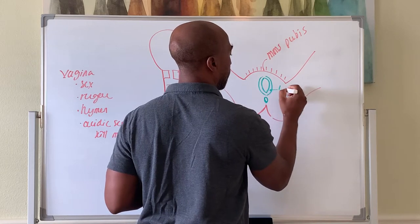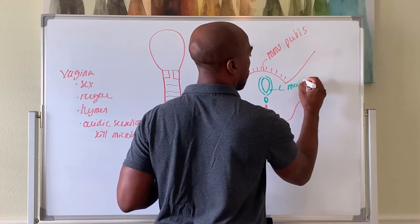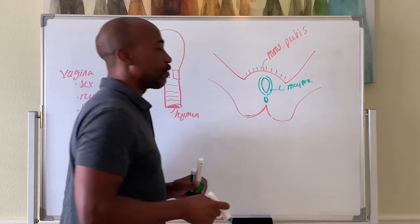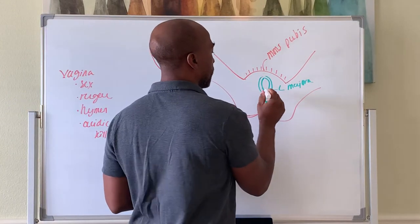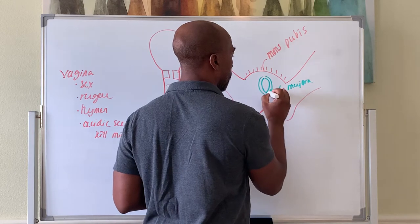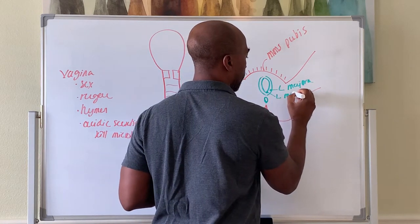This is the labia majora, the outer folds around the vagina or the orifice that has hair on it. You have an inner fold called the labia minora. This one is hairless and is normally of a different color, darker usually.